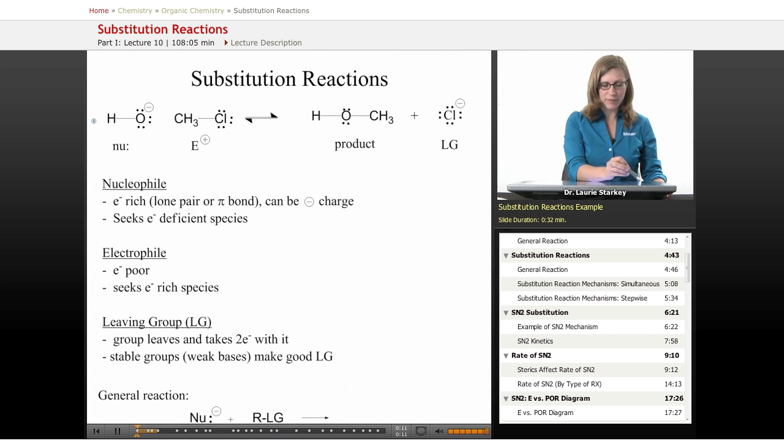Here we have hydroxide reacting with chloromethane. In our product, where the chlorine used to be on the carbon chain, we've replaced it with the OH group, and the chlorine is now on its own as chloride. This is described as a substitution since we have replaced one group with another. Let's define some of the players in this reaction.